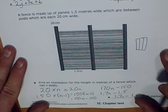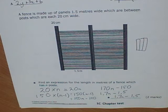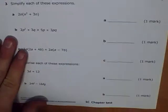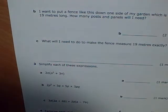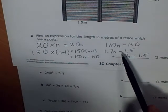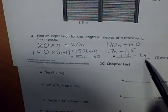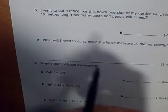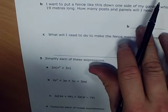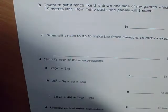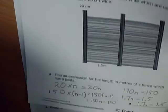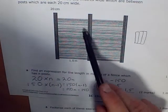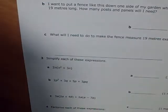Let's look at question B. Part B: I want to put a fence like this down one side of my garden which is 19 metres long. How many posts and panels will I need? I don't want you to use this formula at this stage, although you could, because most of you didn't. I want to show you there are other ways of trying to tackle this question. I need to have at least enough posts and panels to cover this. I'm going to make a guess.